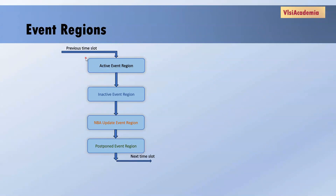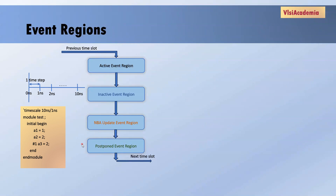Before moving further, I would like to give a brief about the terms previous time slot, next time slot, and current time slot. So if I see this piece of code, using the timescale directive I have first defined the time unit and time precision for this module test. Time unit is a measurement of delays and simulation time. In simple terms, when you give a hash 1 delay, the unit of that delay is decided by the time unit. So in this code, when I have mentioned hash 1, it will be considered as 10 nanoseconds. If I mention hash 2, it will be considered as 20 nanoseconds.